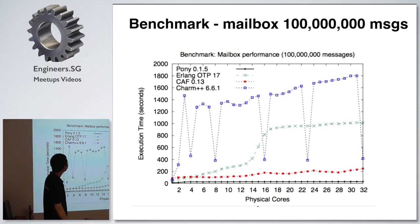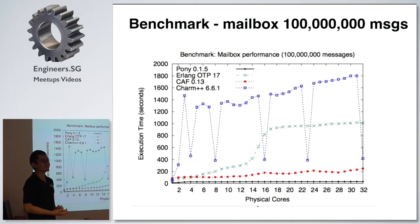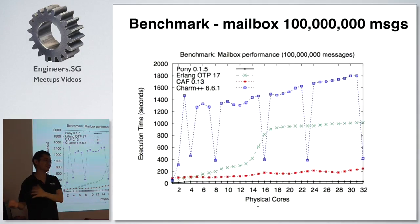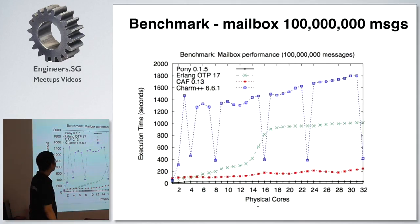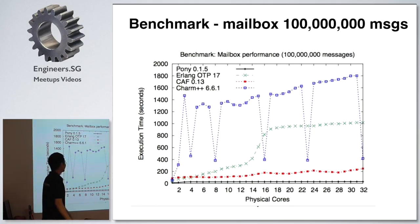A better benchmark for Pony involves messaging throughput — sending lots of messages to mailboxes. Erlang has a problem here: it essentially says you share nothing, so when you send messages you make a copy, which takes time. In Pony, when you share a message, you literally just share the reference to the object — zero-copy messaging. Because of the type system guarantees, if you send an object to another actor, nobody else can touch it, so you can send the whole reference. This is more performant when sending lots of messages.